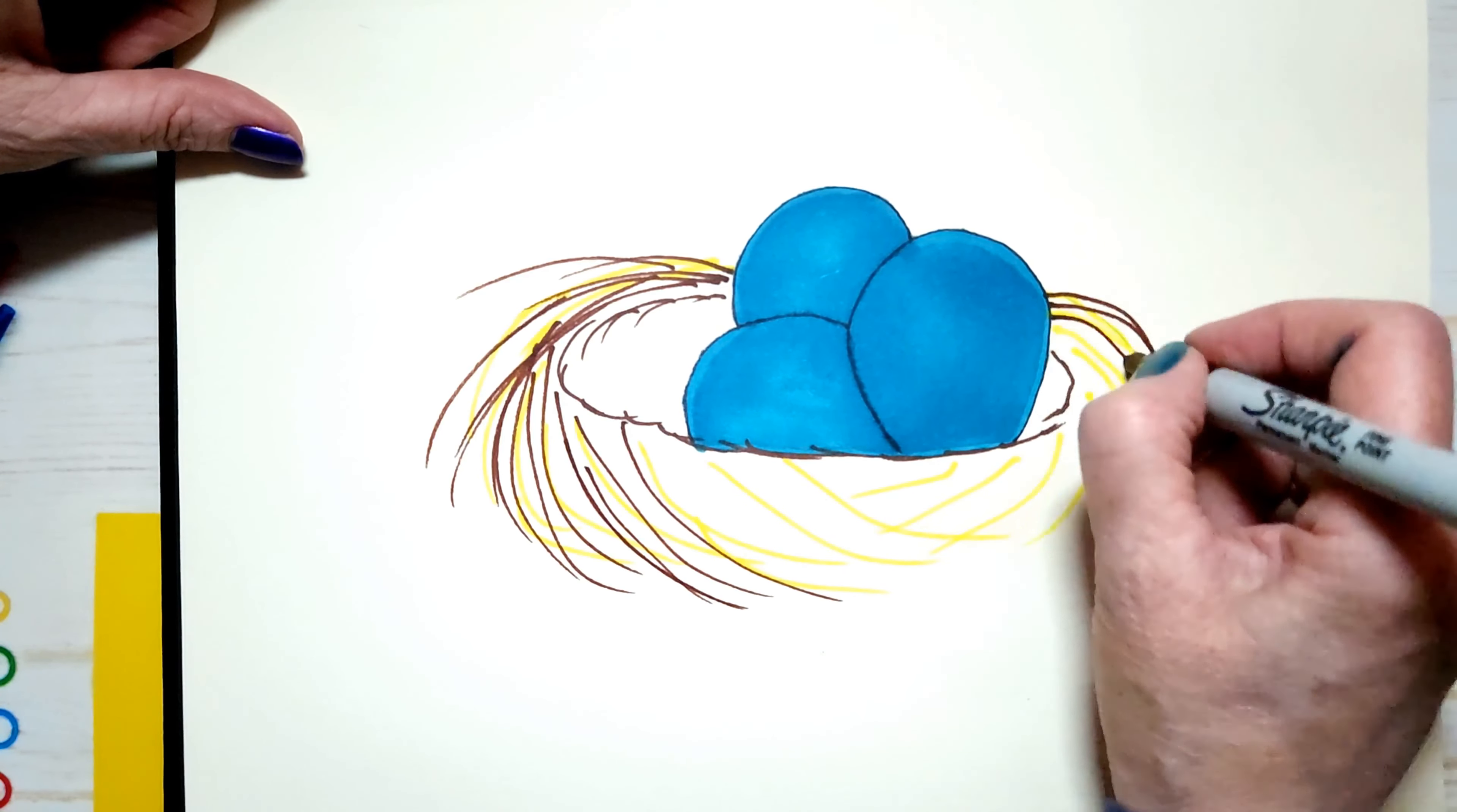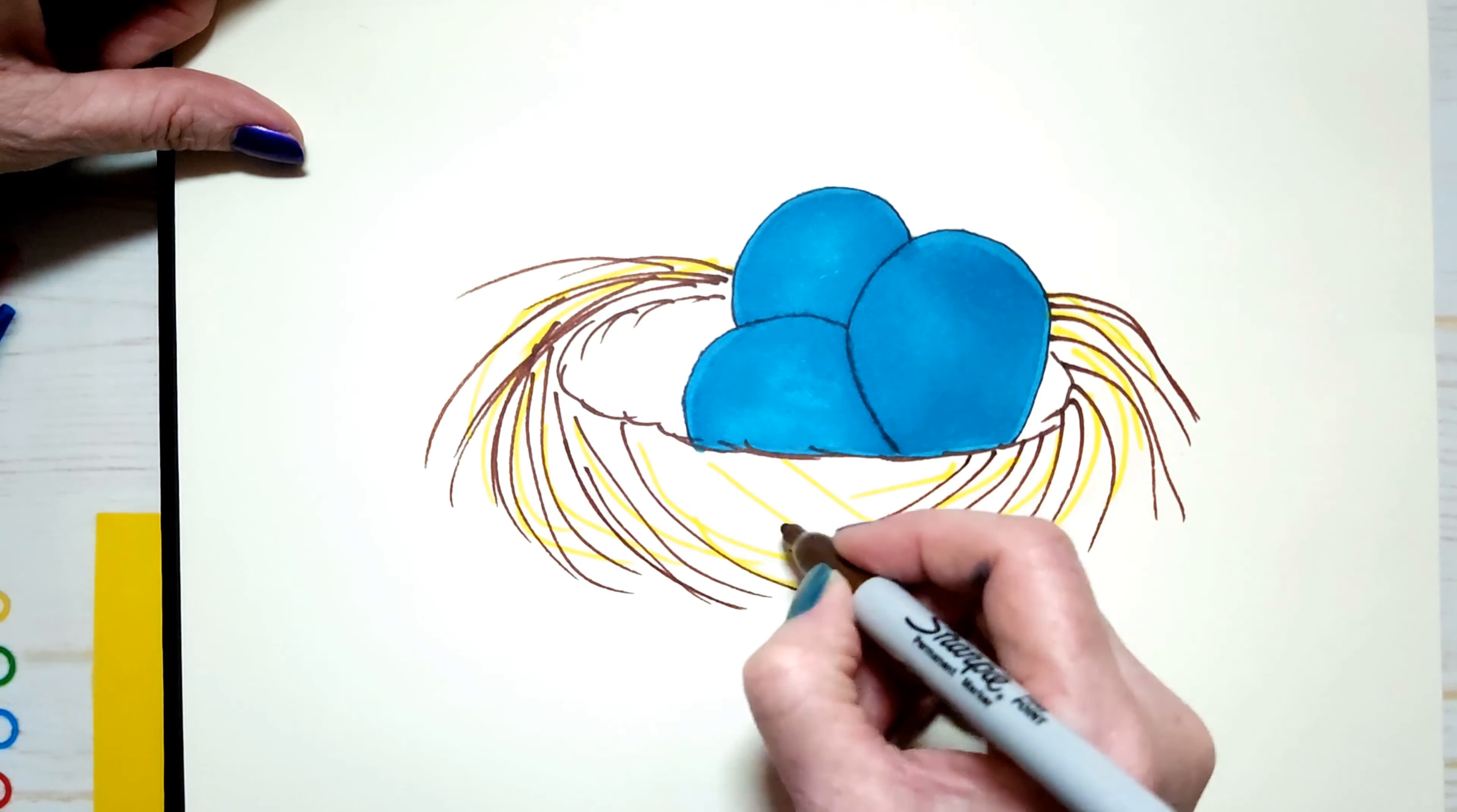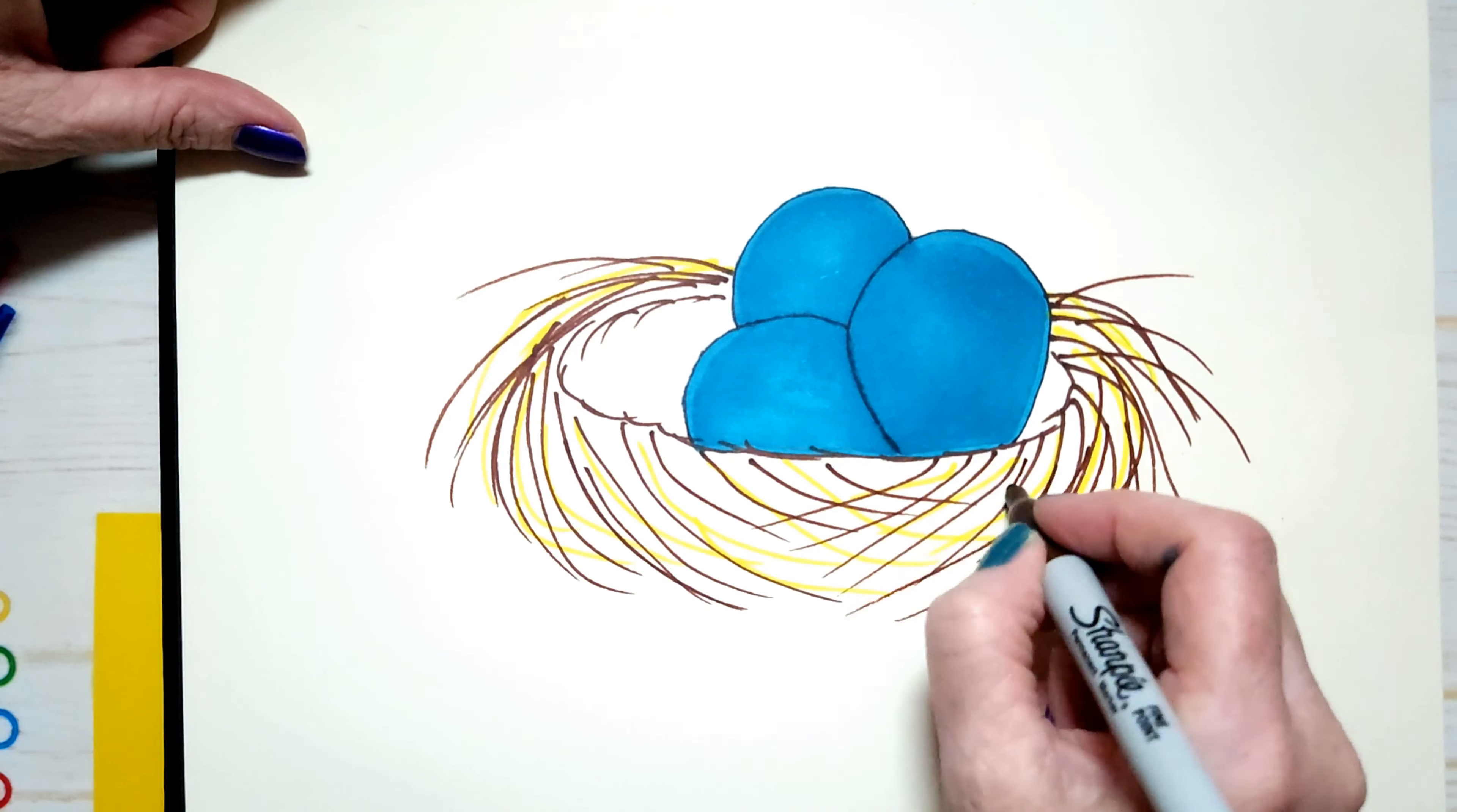But when a bird is making a nest, they're not worrying about perfection. They just want to build a home. And what we're doing here is it's like twigs, you know, twigs that they make their nest from. We just want to make sure that it looks kind of circular.